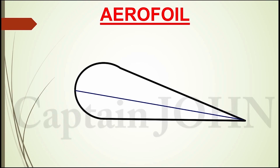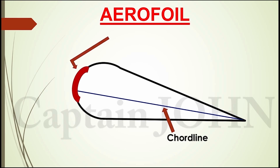Let's talk briefly about the airfoil geometry, because we will need these details soon. The chord line is an imaginary straight line drawn between the leading and trailing edge of an airfoil. The distance between the leading and trailing edge measured along the chord line is the chord length — or more simply, the chord — which is the reference dimension of the airfoil section.